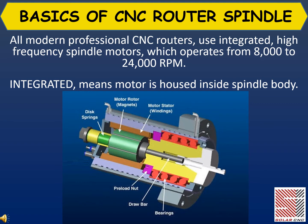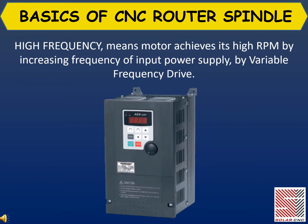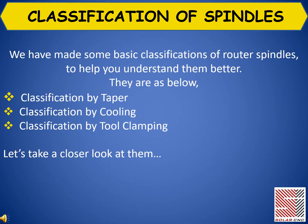All modern professional CNC routers use integrated, high-frequency spindle motors, which operate from 8,000 to 24,000 RPM. Integrated means the motor is housed inside the spindle body. High frequency means the motor achieves its high RPM by increasing the frequency of the input power supply by a variable frequency drive.